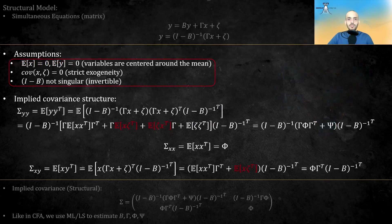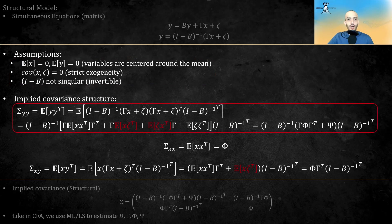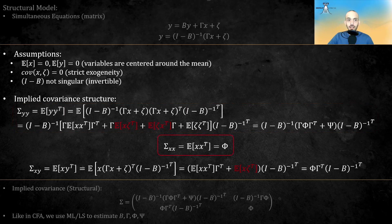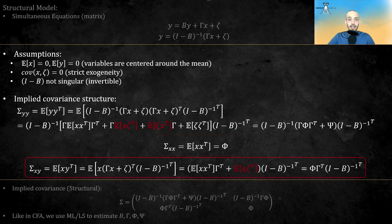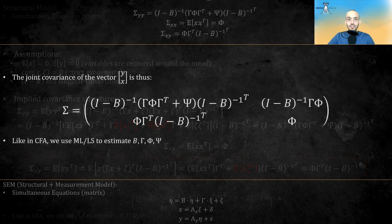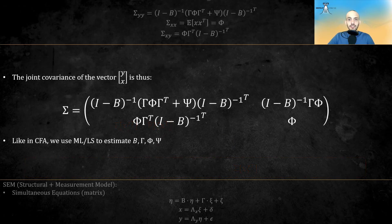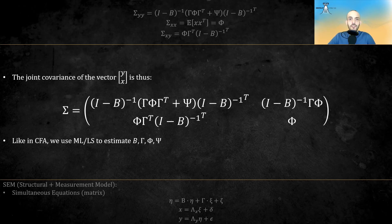If we assume some basic assumptions about the underlying model that generated our data, we can derive the implied covariance matrix. For the y's with the y's, for the x's with the x's, we will denote the covariance matrix by phi. This is appropriate, as in the next step, the x's here will become factors. And for the x's with the y's, the terms in red cancel, because of the assumptions we made. The joint covariance of the y-x vector is thus this half-scary matrix, and like in CFA, we will use maximum likelihood or least squares to estimate the coefficients of the model.